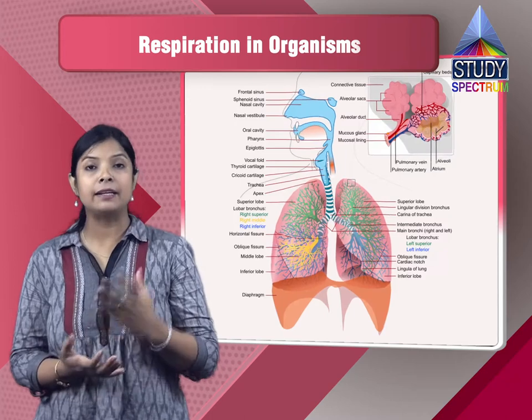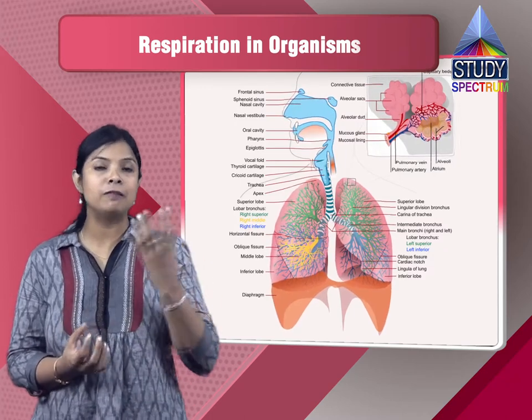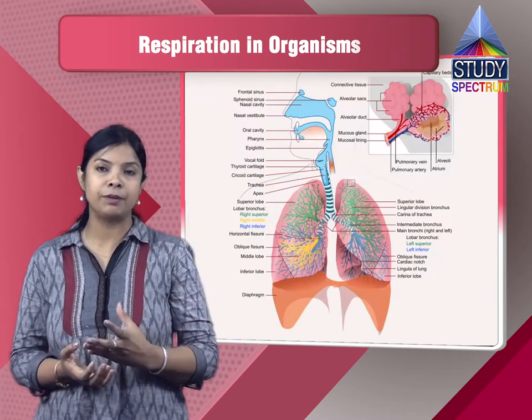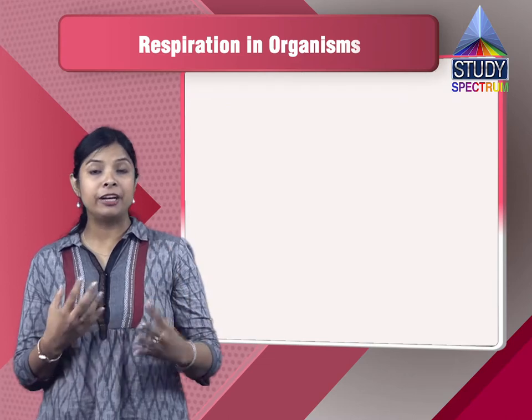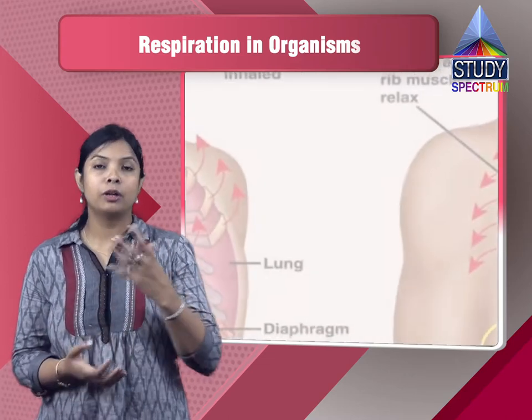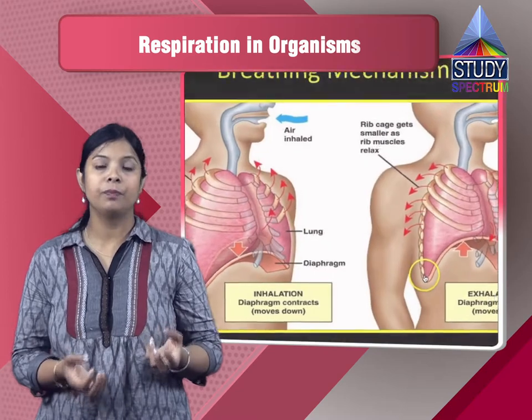So here we have seen that the respiration process involves two terms — breathing and respiration — and we have seen the mechanism through discussion and activity. Now, other than human beings, a lot of other organisms like elephants, lions, tigers, birds, and different reptiles like snakes and lizards also have lungs and perform respiration. But there are more organisms present that don't have lungs — so how do they respire?